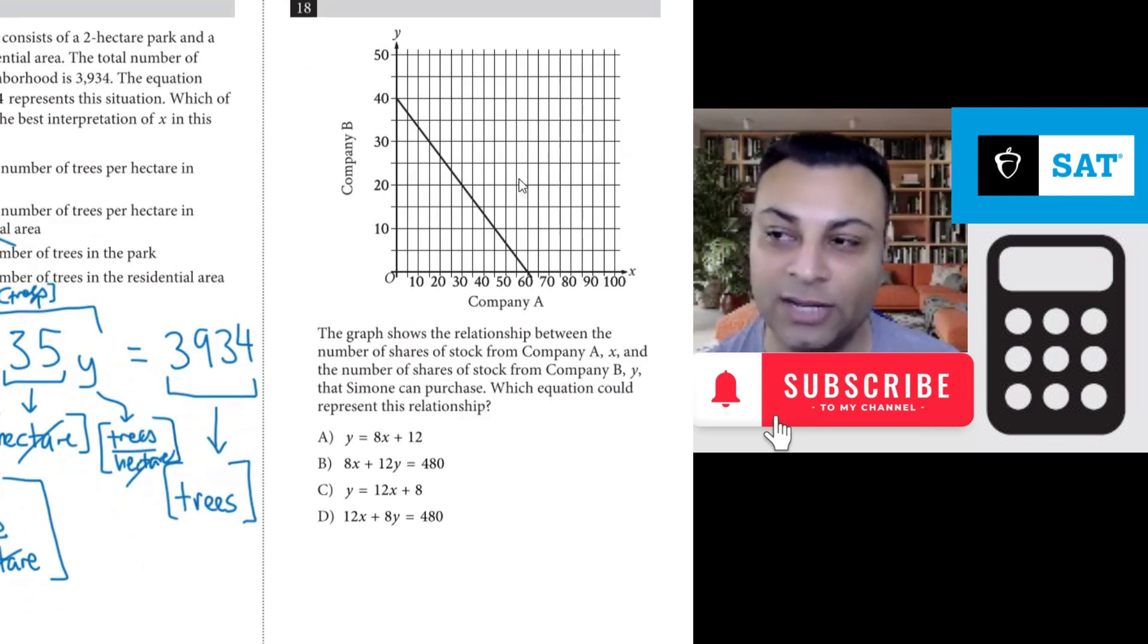Okay, this particular line, the first thing we note is that this line has a negative slope. You see, it's going down when read left to right. It's going down, negative slope.